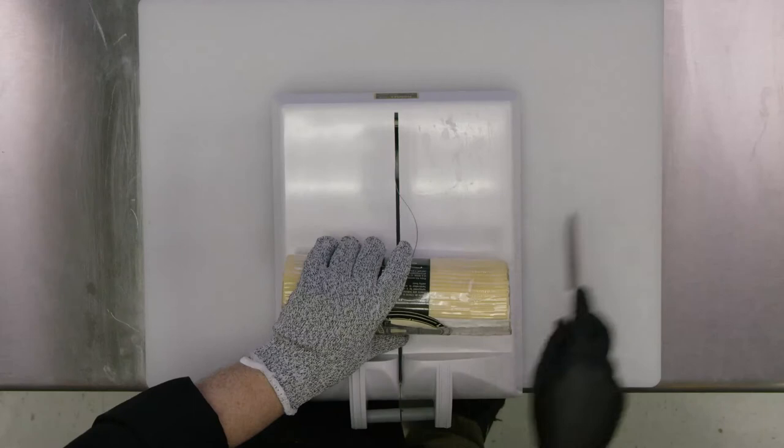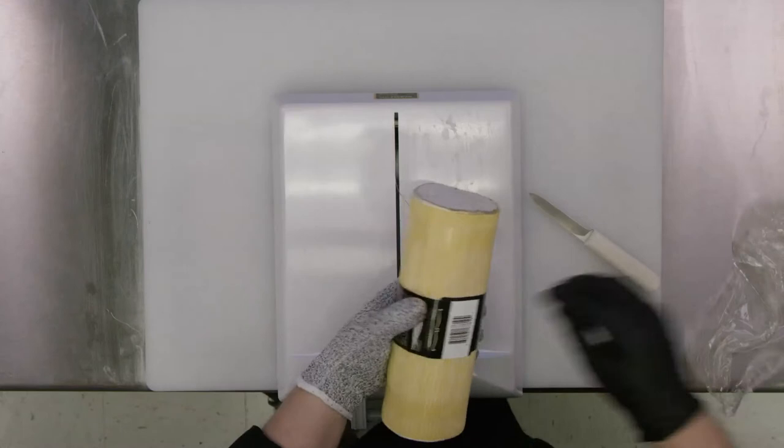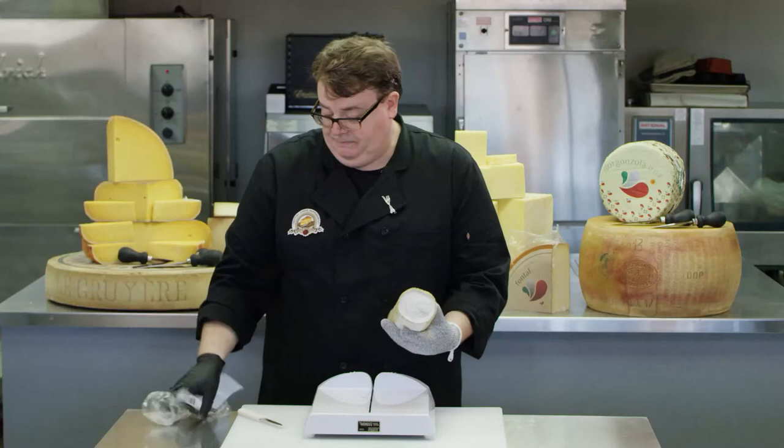For that, we'll need our cut glove and paring knife. Of course, always cut away from you. We'll need to remove all of this plastic and the paper.